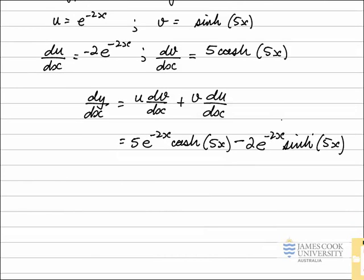I can simplify my answer a little bit. I've got a common factor of e to the negative 2x. If I take e to the negative 2x outside, I'm left with 5 cosh of 5x minus 2 sinh of 5x.